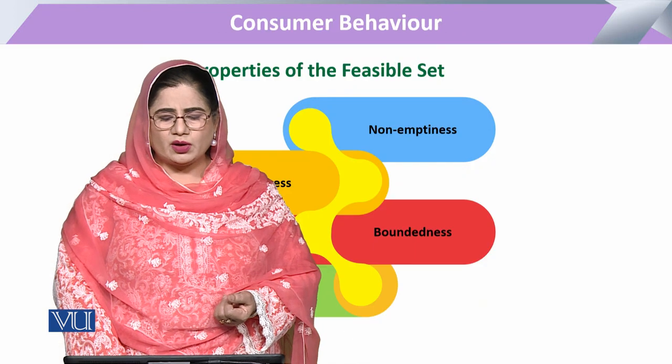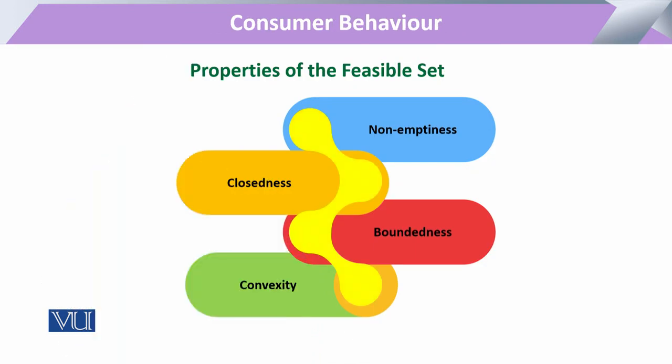Coming to the properties, we have four main properties of a feasible set: first, non-emptiness; second, closeness; third, boundedness; and fourth, convexity. We will discuss these properties one by one.